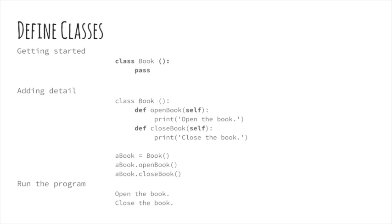Dummy methods with a pass statement could be added to a class to serve as a placeholder, but in this example, the methods open_book and close_book have a more useful task to perform: print a message. Add these statements to create an object — a virtual book if you will — and try out the methods. What you should see when you run the program are the messages: open the book, close the book.